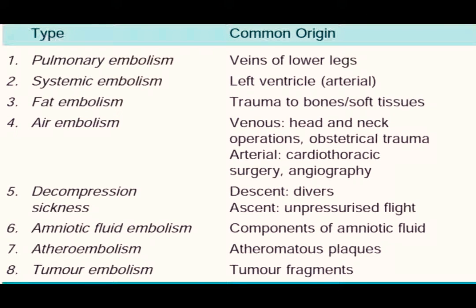The types of embolism are: pulmonary embolism, with common origin in the veins of the lower legs; systemic embolism, with common origin in the left ventricle; fat embolism, originating from trauma to bones and soft tissues; air embolism, from venous sources such as head and neck operations, obstetric trauma, or arterial sources such as cardiac surgery and angiography; decompression sickness from ascent and pressurized flight; amniotic fluid embolism from components of amniotic fluid; atheroembolism from atheromatous plaques; and tumor embolism from tumor fragments.